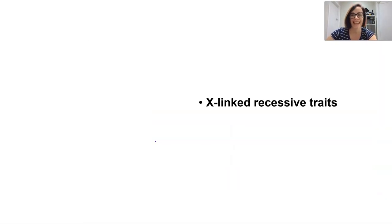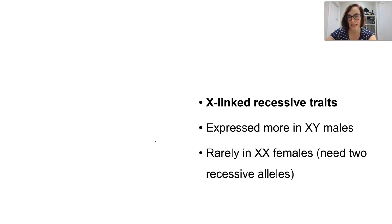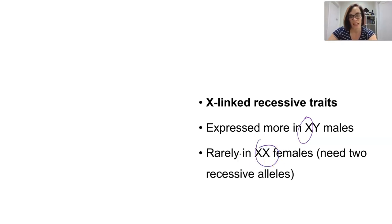In humans, X-linked recessive traits — specifically recessive traits — are mainly expressed in biological males. They're rarely expressed in XX females, mainly because males only have one copy of the X, so that's the only set of genes they have to work with. In females with two X's, if they have one allele that maybe is mutated or something has gone wrong with it, they have another one to fall back on.